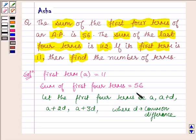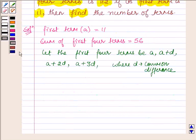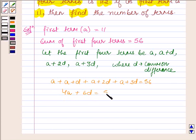Now we are given that the sum of these four terms is equal to 56. So we have A plus A plus D plus A plus 2D plus A plus 3D is equal to 56, or 4A plus 6D is equal to 56.